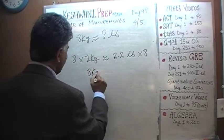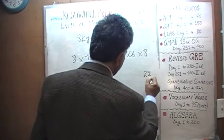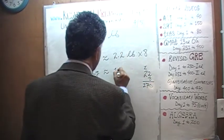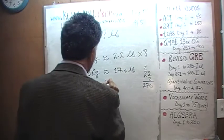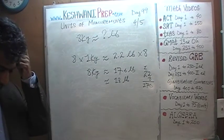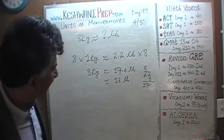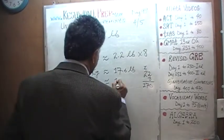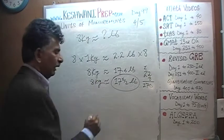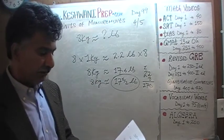Therefore, eight kilograms has to equal approximately 2.2 times eight. Two times eight is sixteen, and 2.2 times eight works out to seventeen point six pounds — or about seventeen and a half pounds. About seventeen and a half pounds equals eight kilos.